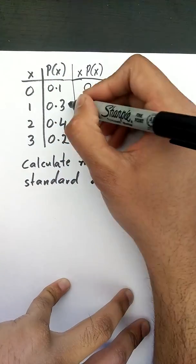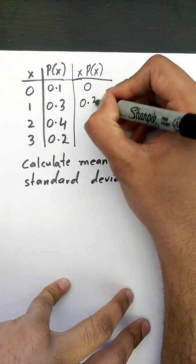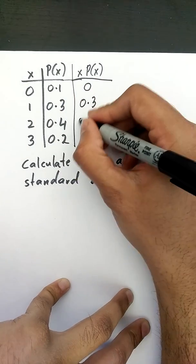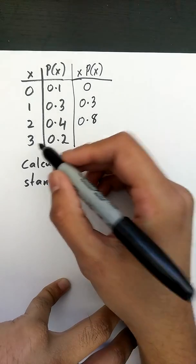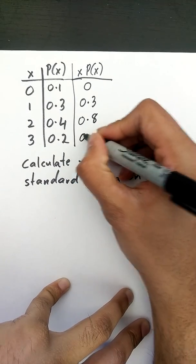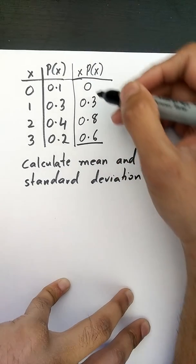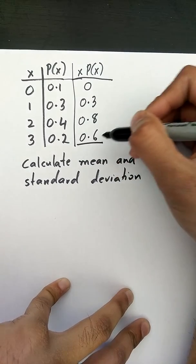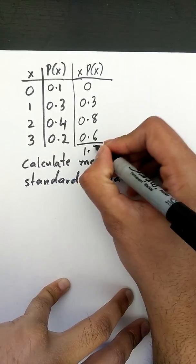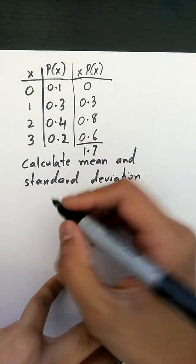So 0 times 0.1 is 0, 1 times 0.3 is 0.3, 2 times 0.4 is 0.8, and 3 times 0.2 is 0.6. You want to total this column up, so that's 1.1, 1.7, and the total right here is basically your mean.